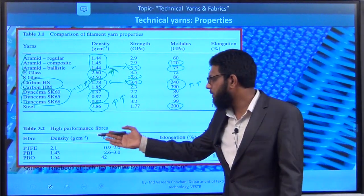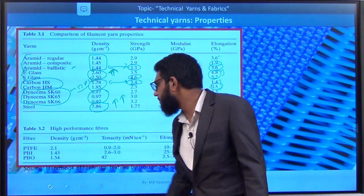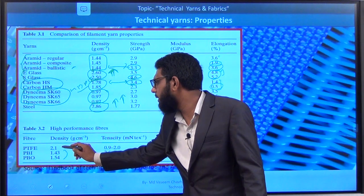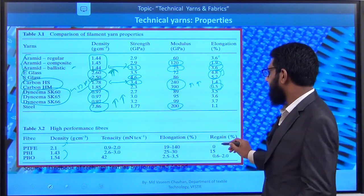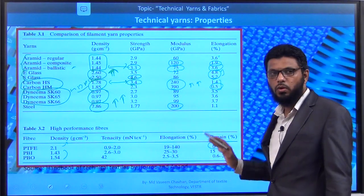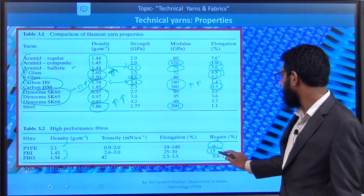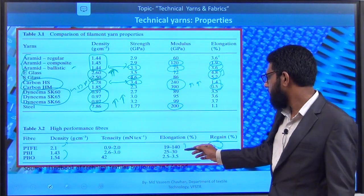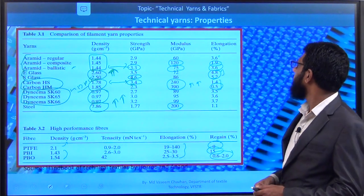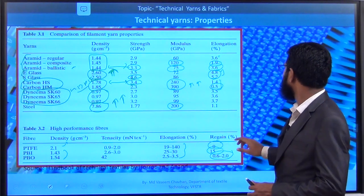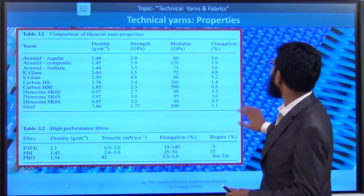Afterward, the high performance fibers recently coming into the market — polytetrafluoroethylene, PBI, and PBO — are also shown in comparison. PTFE has somewhat moderate density and zero moisture regain, so whenever we don't want moisture absorption at all we can use it. PBI gives somewhat more moisture regain. You can see various elongation figures — minimum or moderate elongation for different fibers. This is all about the comparison of different technical yarns.